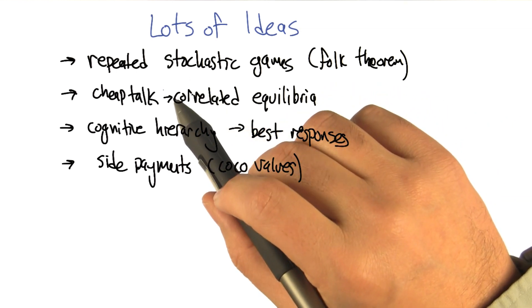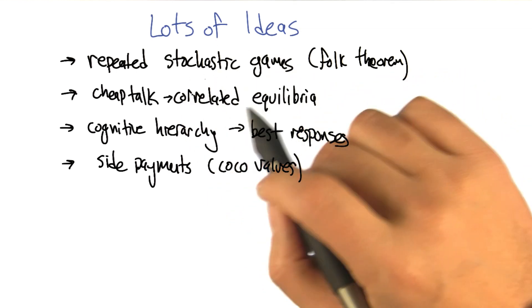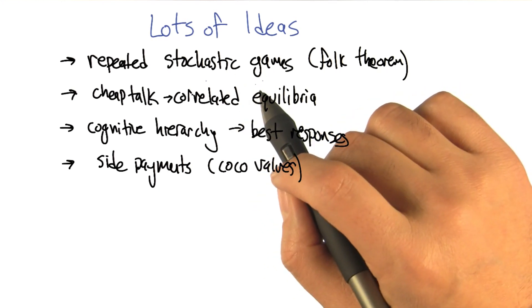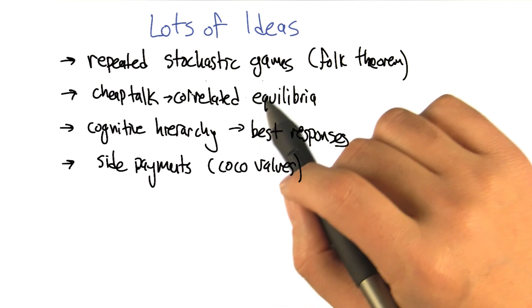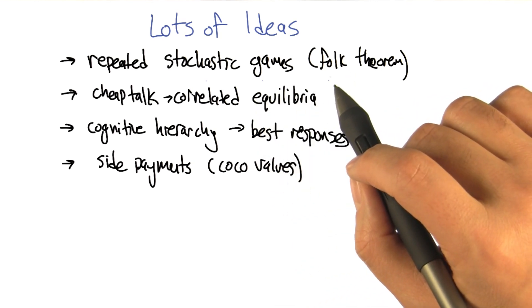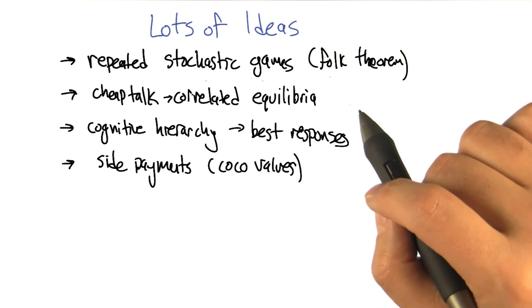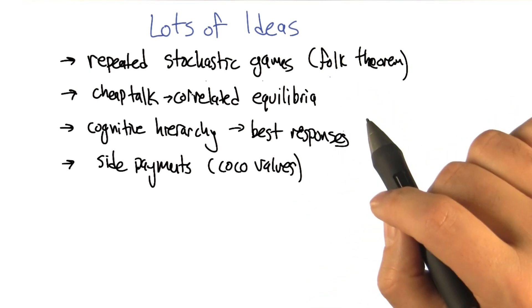You can think about stochastic games as themselves being repeated. So repeated stochastic games. We're going to play a stochastic game and when it's over, we're going to play it again. And that allows us to build folk theorem like ideas at the level of stochastic games. Oh, that's cool. And so there's some efficient algorithms for dealing with that. So that's one idea.